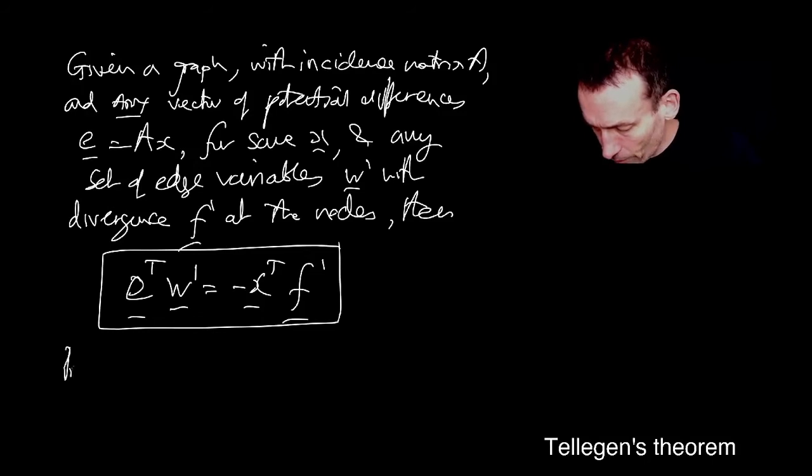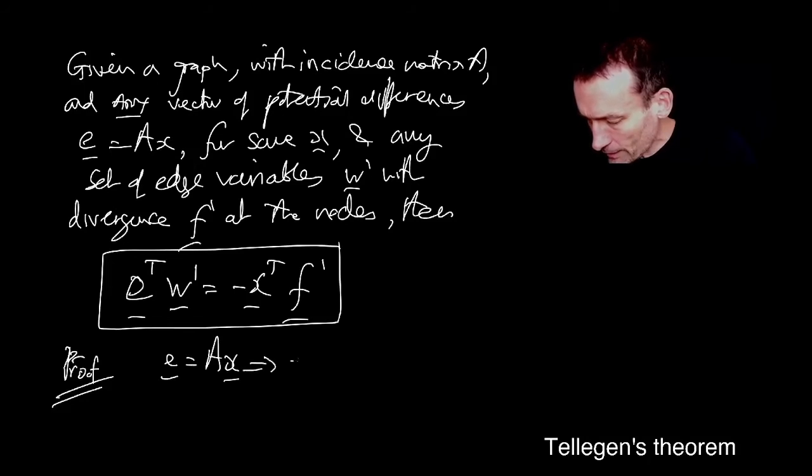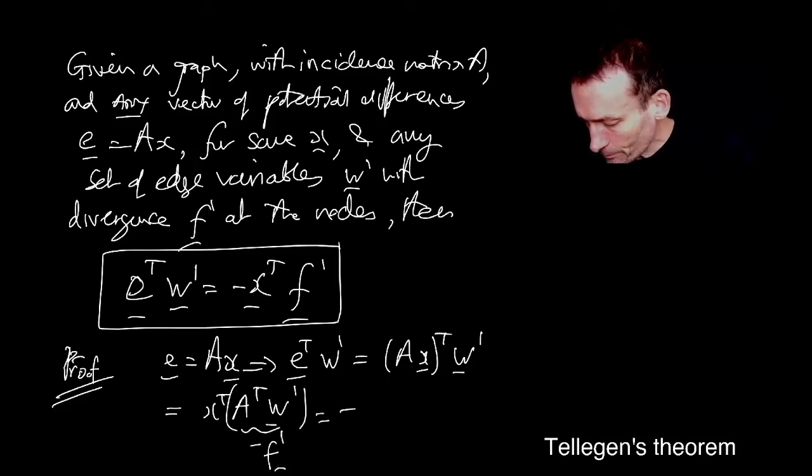Let's just prove it first. It's very easy to prove. Let's look at the left-hand side. E, of course, is A transpose X, which implies that E transpose W prime is A X transpose W prime. But that's equal to X transpose A transpose W prime. But this thing is minus F prime. Done.